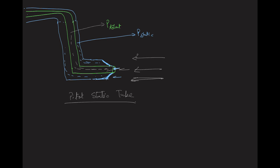As the airflow enters the green tube, there is a blockage at the end of this green tube. Due to this blockage, air becomes stagnant inside the green tube. The air particles here are stagnant but they are moving in with high energy, so they create a pressure inside this tube. This pressure is known as total pressure.